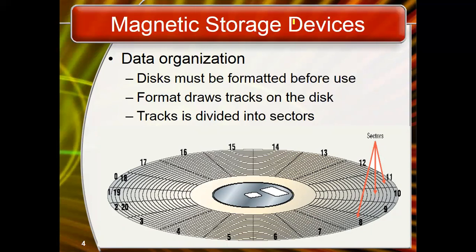Platters are further separated into tracks and sectors, where tracks are concentric circles and sectors are pie-shaped wedges on the track. Data is organized in these tracks and sectors. The hard disk stores information in the form of magnetic fields — data is stored digitally as tiny magnetized regions on the platters, where each region represents a bit, which is a zero or one.